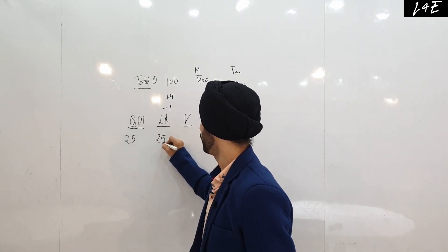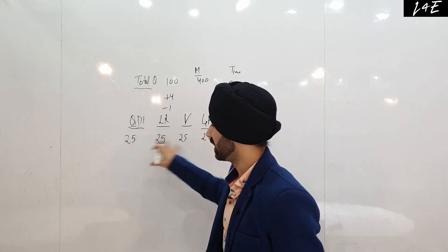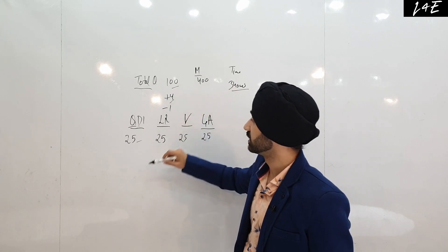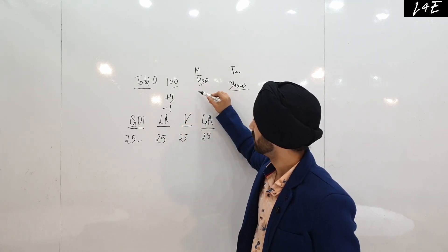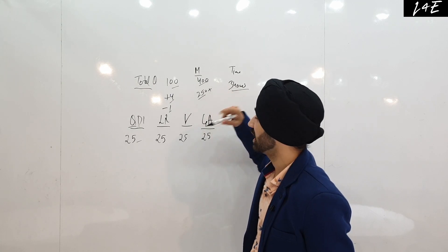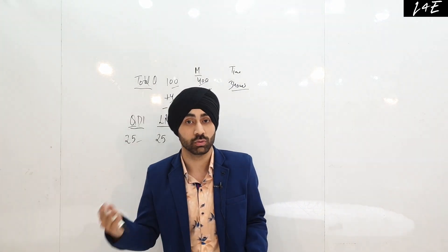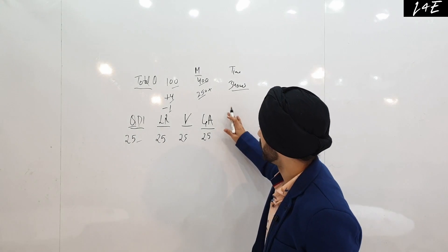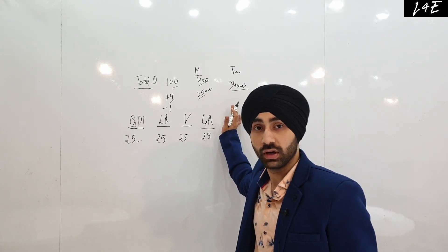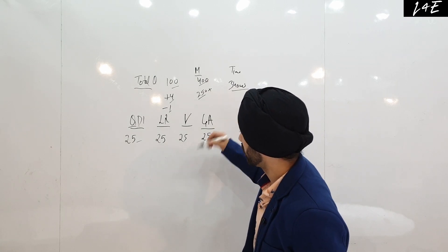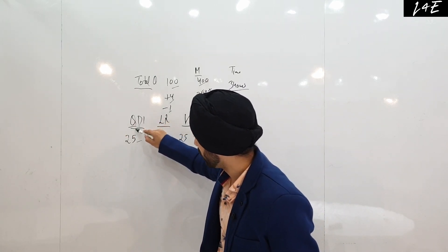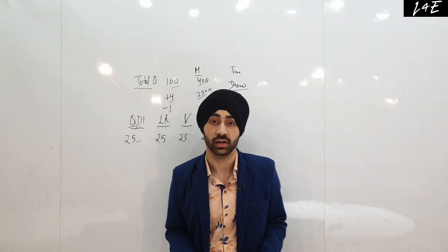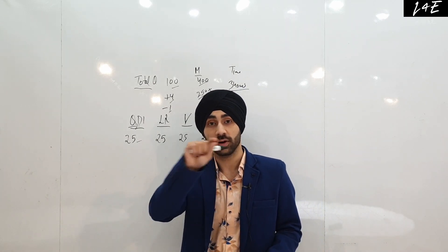Each section has 25 questions and every question is 4 marks. A good score is 250-plus, and for top percentile you need somewhere around 320 to 325 and above. You can jump between sections — if you're doing Quant and DI and you want to switch to LR, Verbal, or GK, you can do that. You have the option to jump to any section.